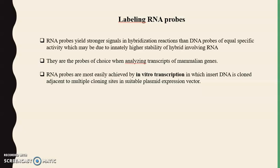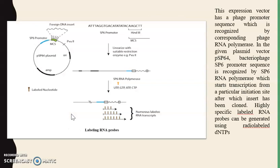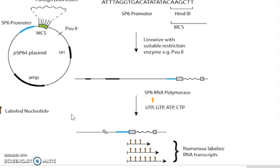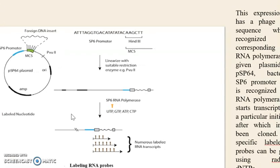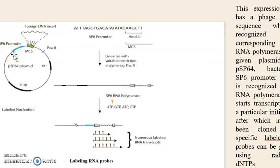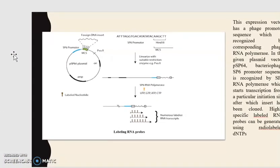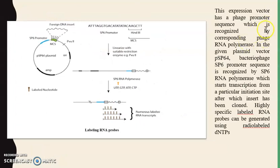RNA probes yield stronger signals in hybridization reactions than DNA probes of equal specific activity, which may be due to the inherently higher stability of hybrids involving RNA. They are the probes of choice when analyzing transcripts of mammalian genes and are most easily achieved by in vitro transcription, in which insert DNA is cloned adjacent to a multiple cloning site in a suitable plasmid expression vector. Here we can see the pSP64 plasmid in which a foreign DNA insert and SP6 promoter are present.